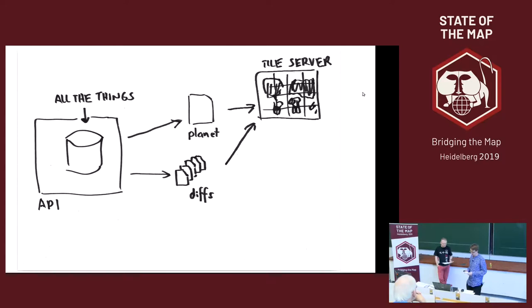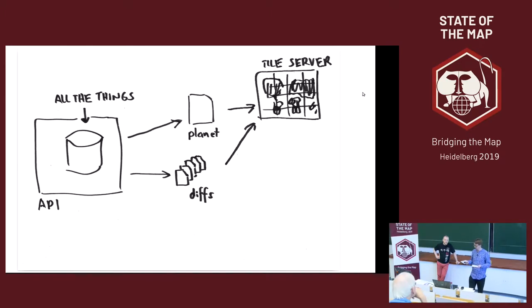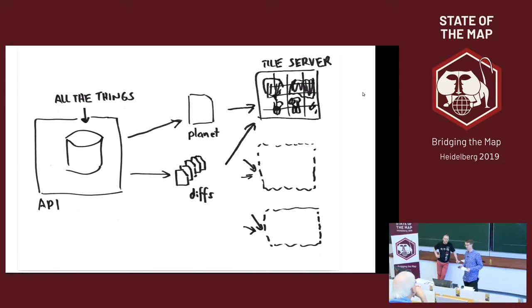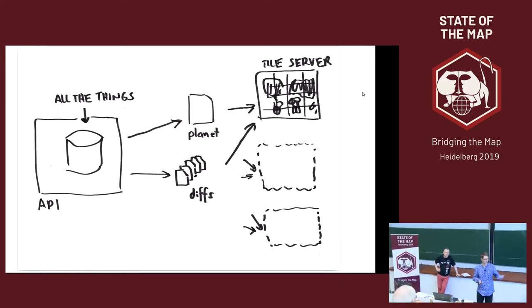You can use this planet and those diffs to operate your own services. For example, we as OpenStreetMap have a map on OpenStreetMap.org that uses exactly this mechanism to get the data and work with it. You can insert your own application into that pipeline and consume the data however you want.